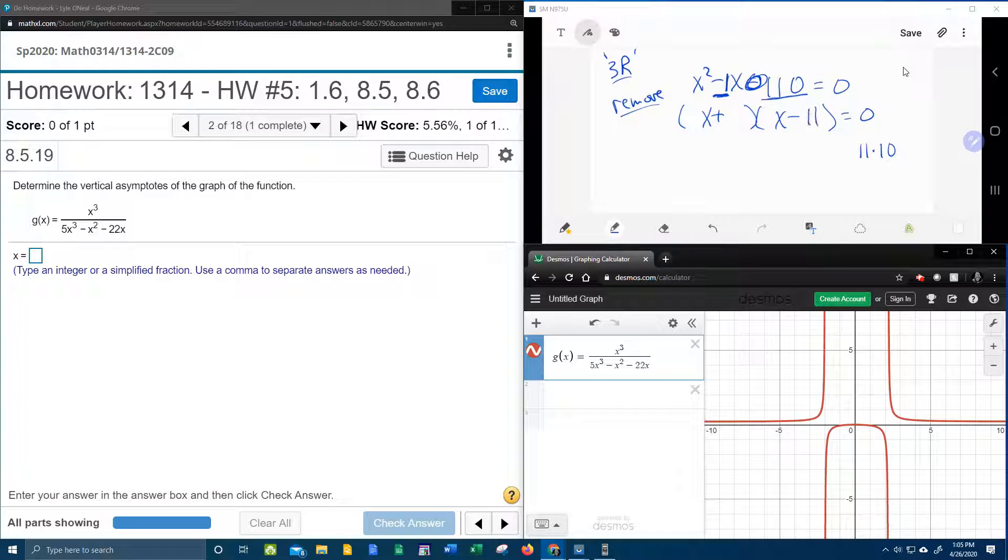Now remember I need a negative 1, so I want the 11 to be negative and the 10 to be positive. Got that? 10 minus 11 is negative 1. 10 times negative 11 is negative 110.